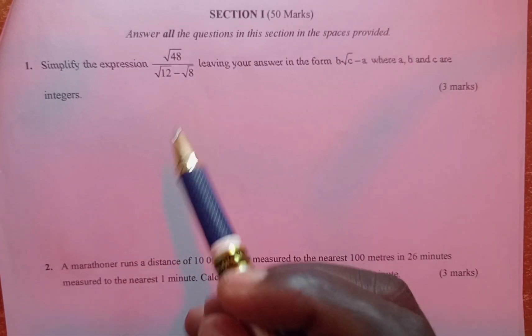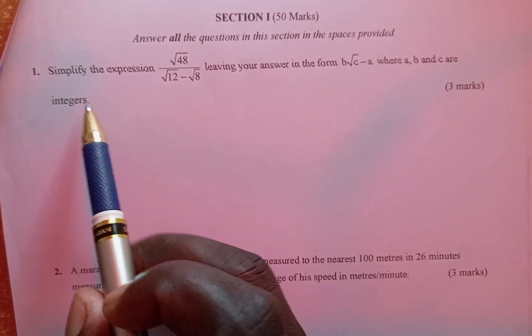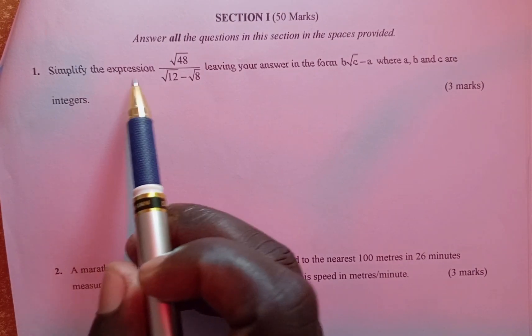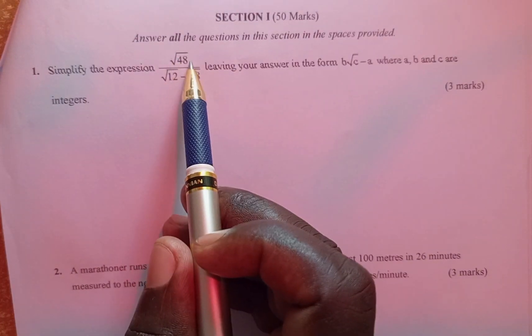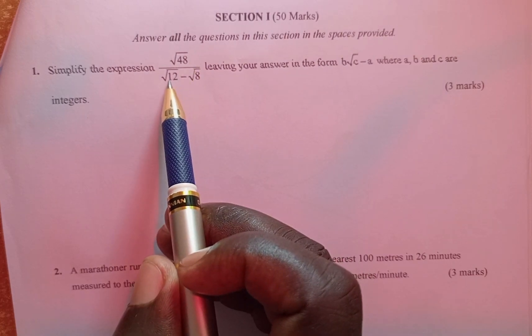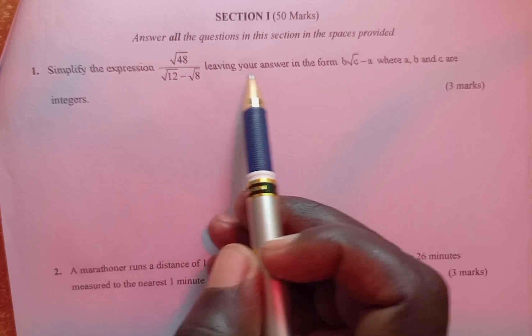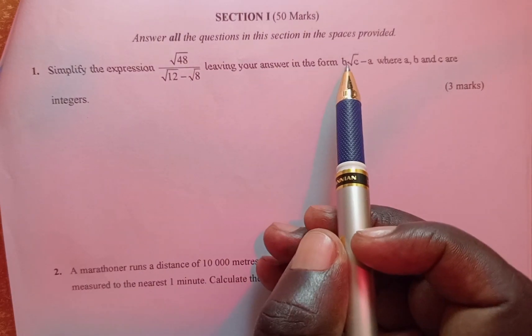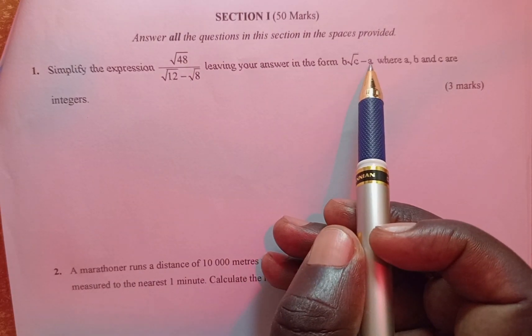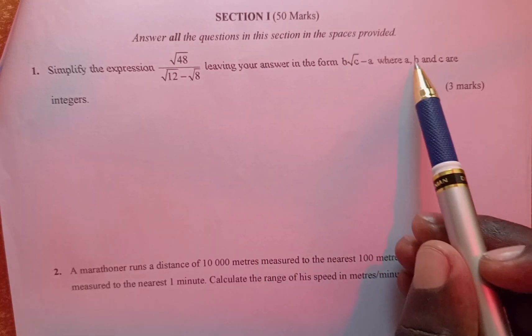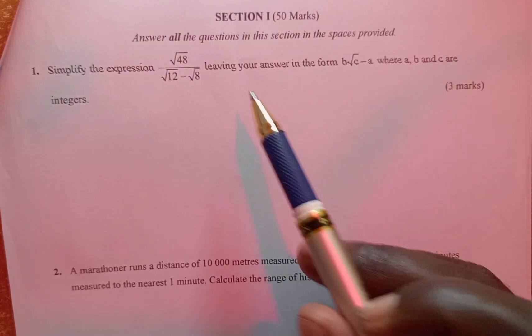And the question we have reads: Simplify the expression √48 divided by (√12 - √8), leaving your answer in the form b√c - a where a, b and c are integers.